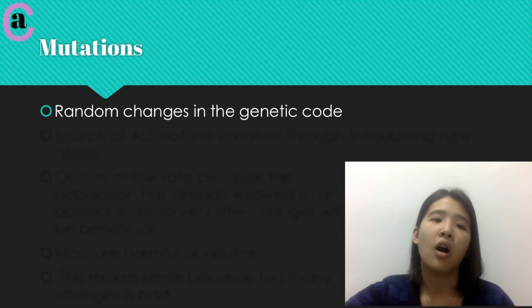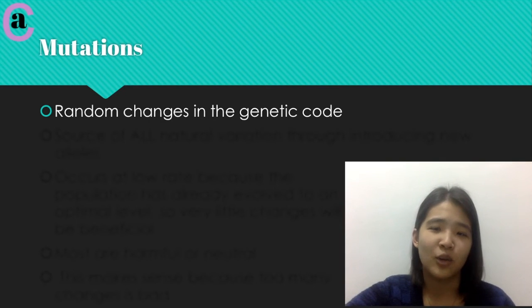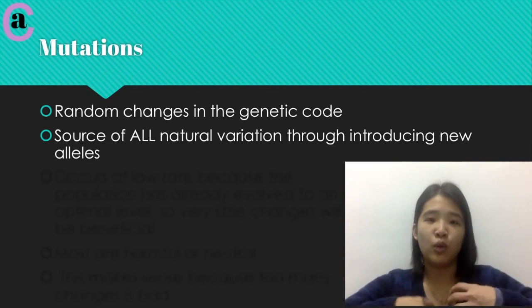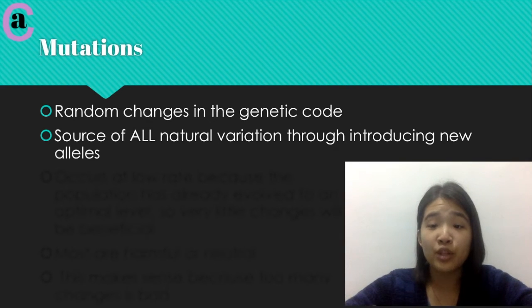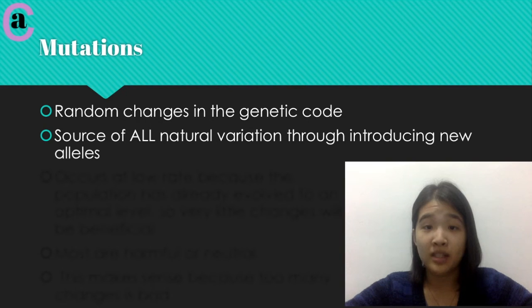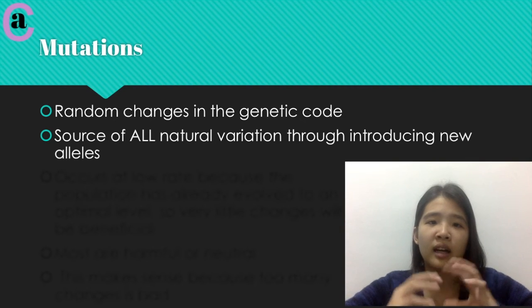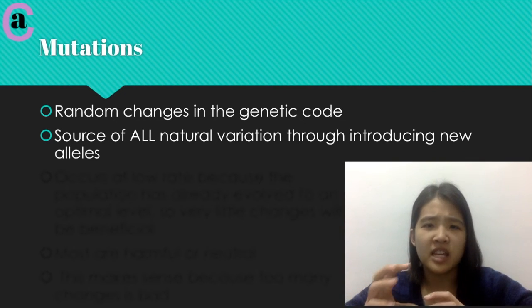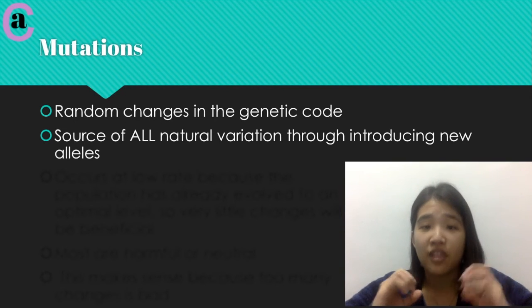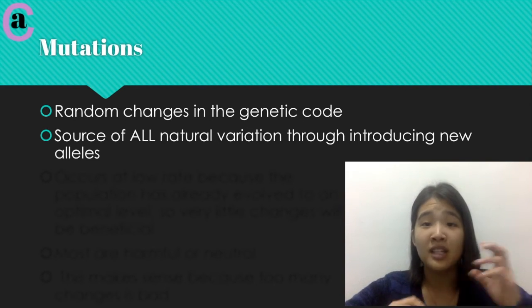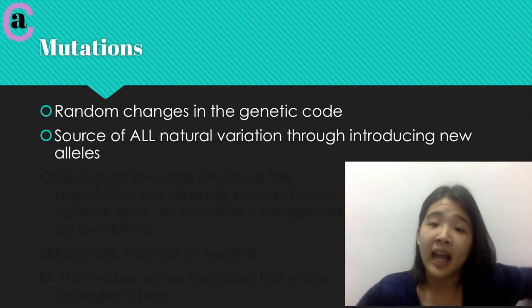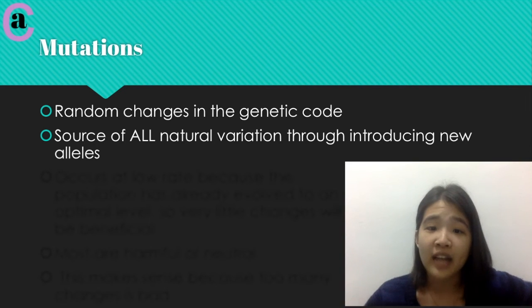Mutations are random changes in the genetic code. Basically what happens is that you have reproduction — the parent cell producing a child cell. When that happens, you need to copy the DNA of that cell. And sometimes that reproduction of the DNA will have an error somewhere, and that is a mutation. It's some sort of error in the genetic code where the DNA is not copied exactly.